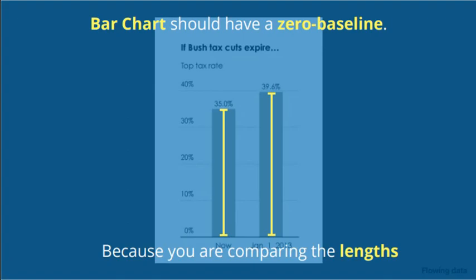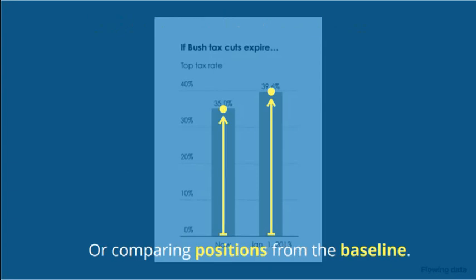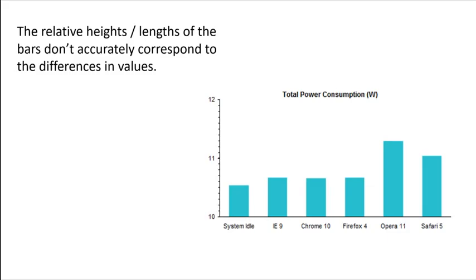Bar charts must have a zero baseline because we're comparing lengths — or the position from the baseline. On this chart, the value range starts at 10; this means that the relative heights of the bars don't accurately correspond to the differences in values. Opera 11 isn't consuming twice as much power as Firefox 4, but it's made to look that way because of the truncated vertical value scale. This is, in air quotes, a visual lie.